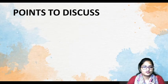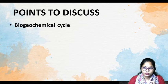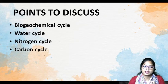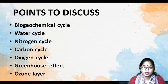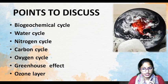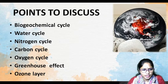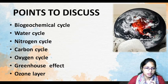So let us discuss what are the points we are going to read about. We will be reading about Biogeochemical Cycle, what is Water Cycle, Nitrogen Cycle, Carbon Cycle, Oxygen Cycle, and what is Greenhouse Effect and how it is affecting the ozone layer. So basically in today's part we will be discussing what are the different types of changes and mechanisms taking place in our Earth.